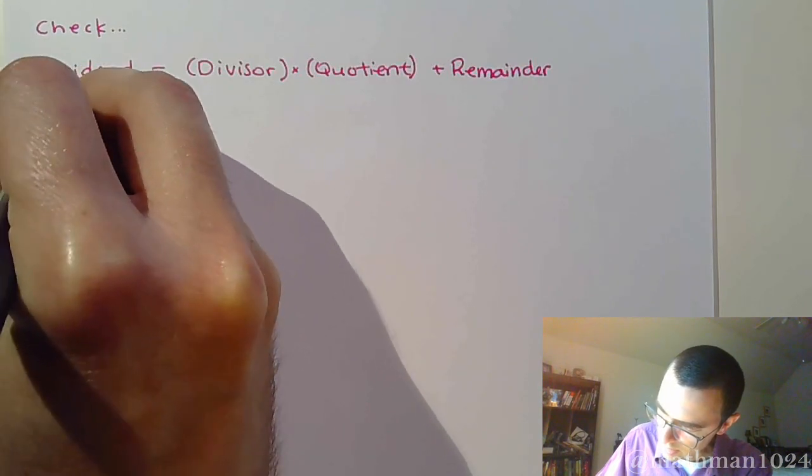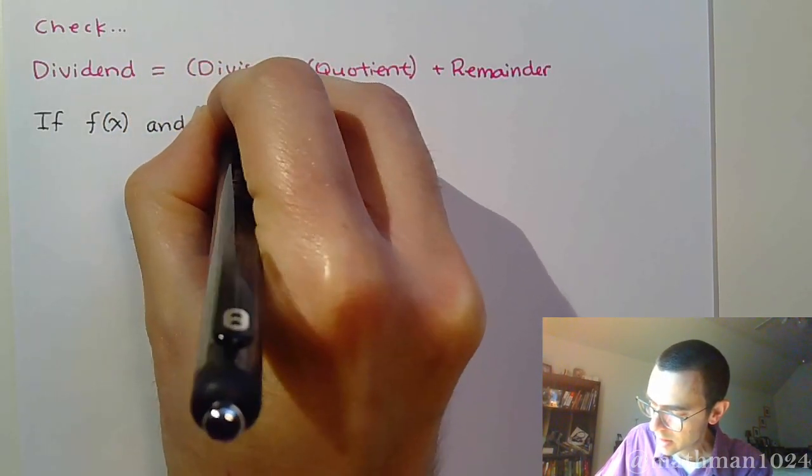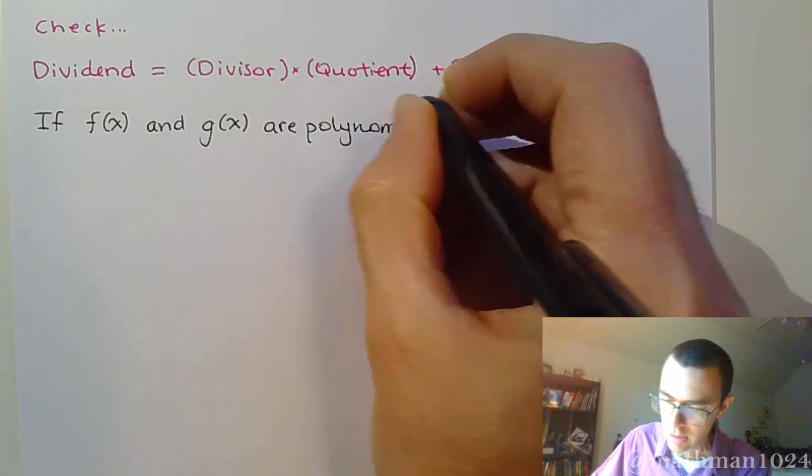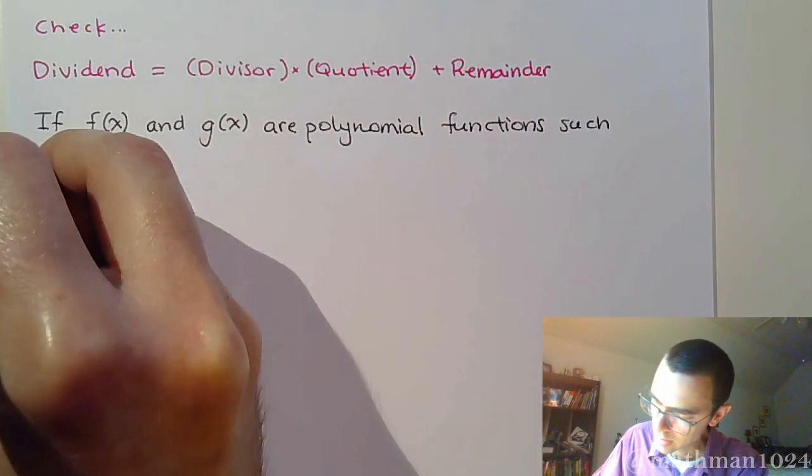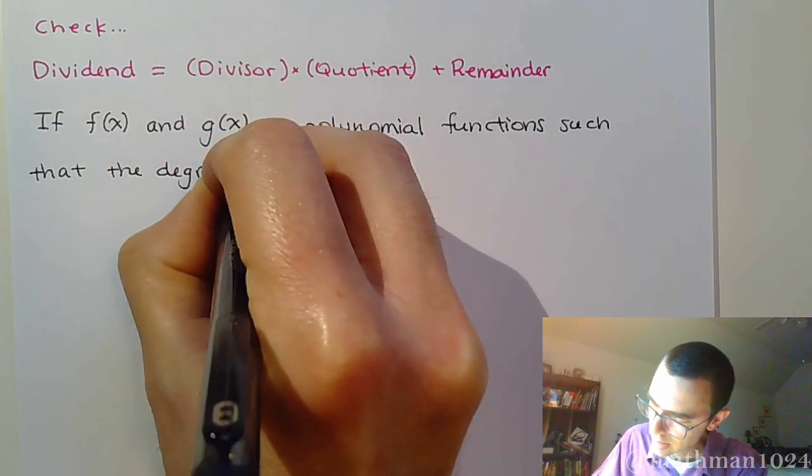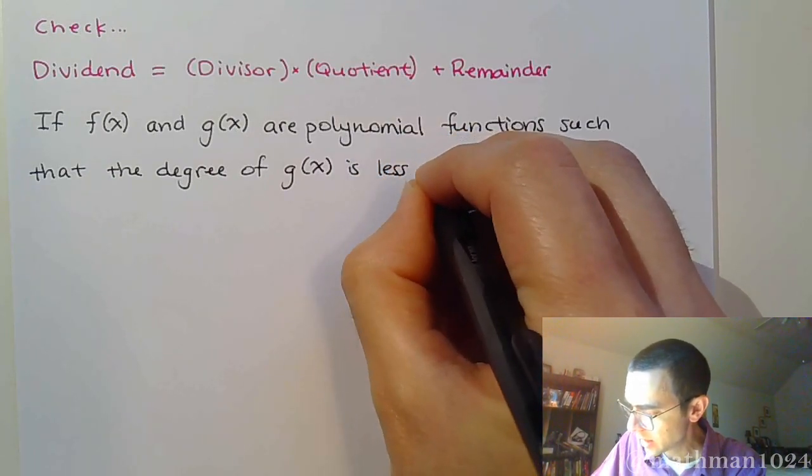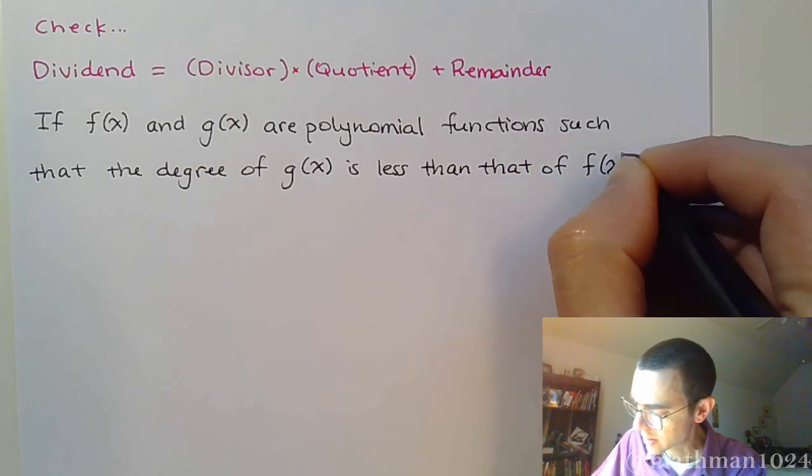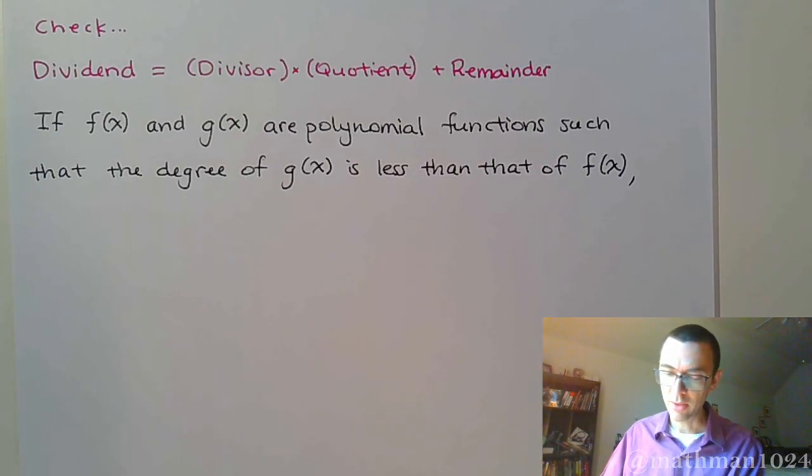So, here is this statement. You've got it in your notes that are available to you. It says that if f and g, if these guys are polynomial functions, polynomial functions such that the degree of g of x is less than that of f of x. So, we've got two functions. One of them has a degree that's less than the other one.